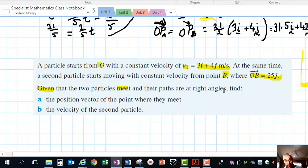We've got two different starting points. Given that the particles meet—that's a given parameter—and their paths are at right angles, find the position vector of the point where they meet and the velocity of the second particle. Right angles basically means we can exploit the dot product. Remember the dot product when we've got right angles has a special property.